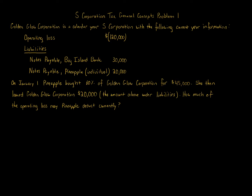This is a loss limitation question asking how much of the operating loss may Pineapple deduct currently — meaning in the tax year. We're told that Golden Glow Corporation has a total operating loss of $120,000 and that Pineapple bought 60% this year.